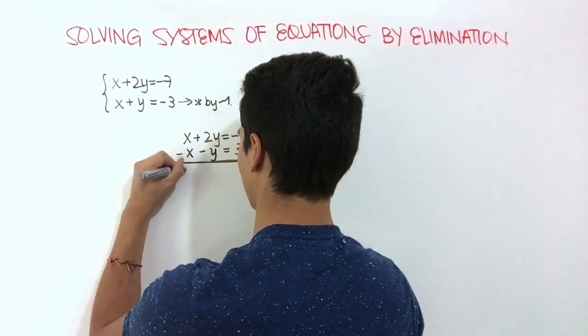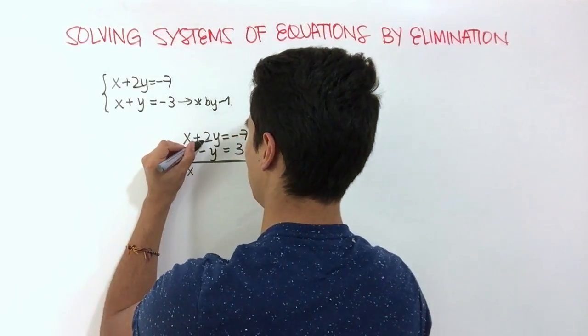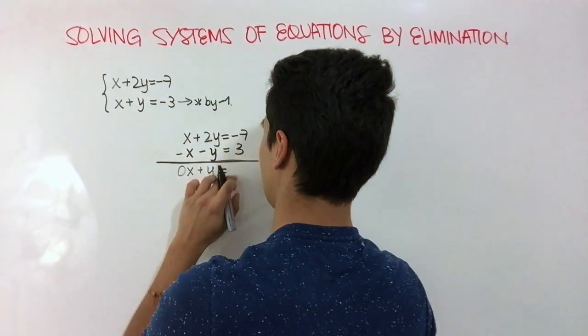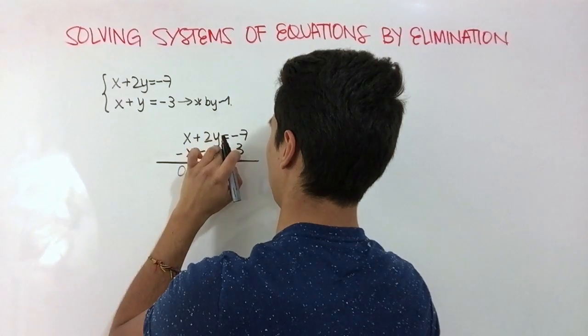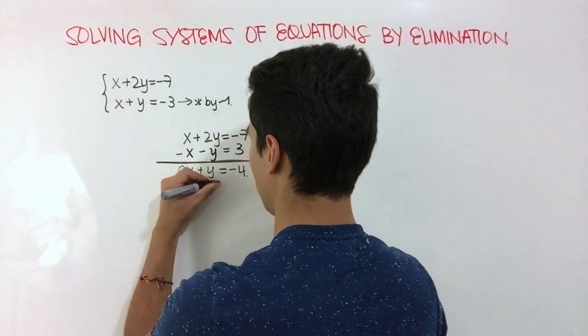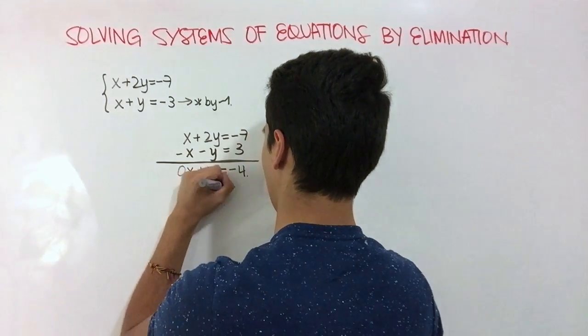So x minus x is 0x, 2y minus y is equal to y, and that's equal to negative 7 plus 3, which is negative 4. So from here we know that y is equal to negative 4.